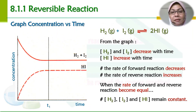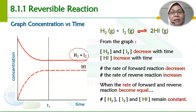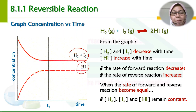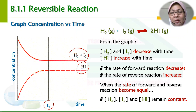Ini ada lagi satu contoh bagaimana graf konsentrasi boleh dilukiskan untuk tindak balas seperti ini. Di sini, H2 dan I2 diambil kira sebagai satu nilai kepekatan bagi bahan tindak balas, dan kepekatan HI ditulis begini — kamu ada dua garisan sahaja. Walaubagaimanapun rupa garisan itu, ada satu masa kepekatan mula menjadi konstan — masa bila equilibrium is attained, keseimbangan telah dicapai.